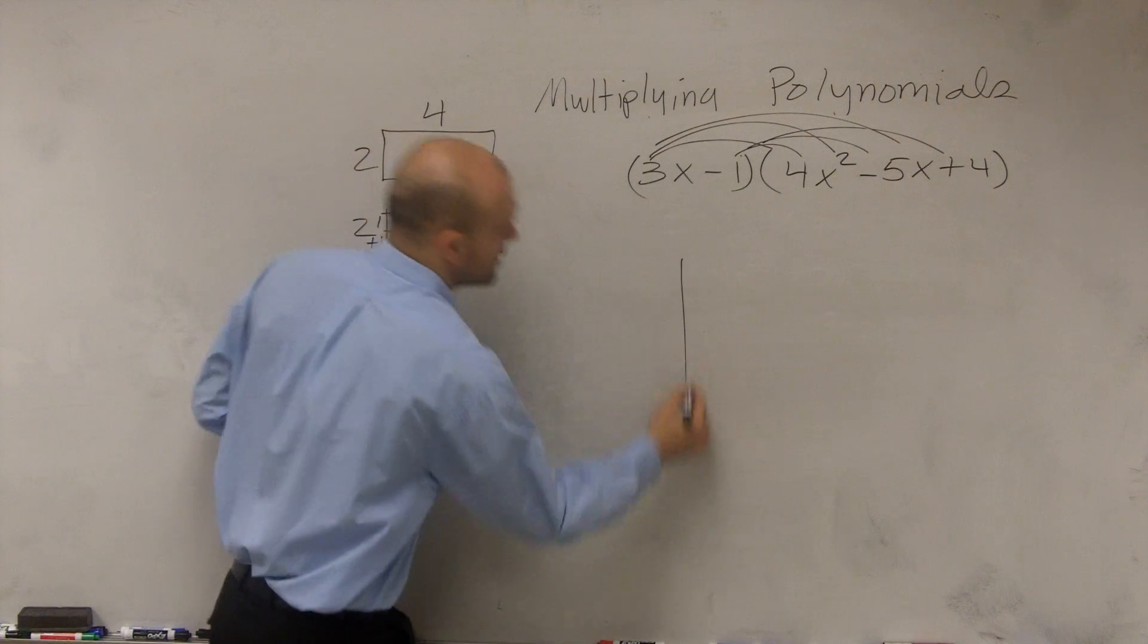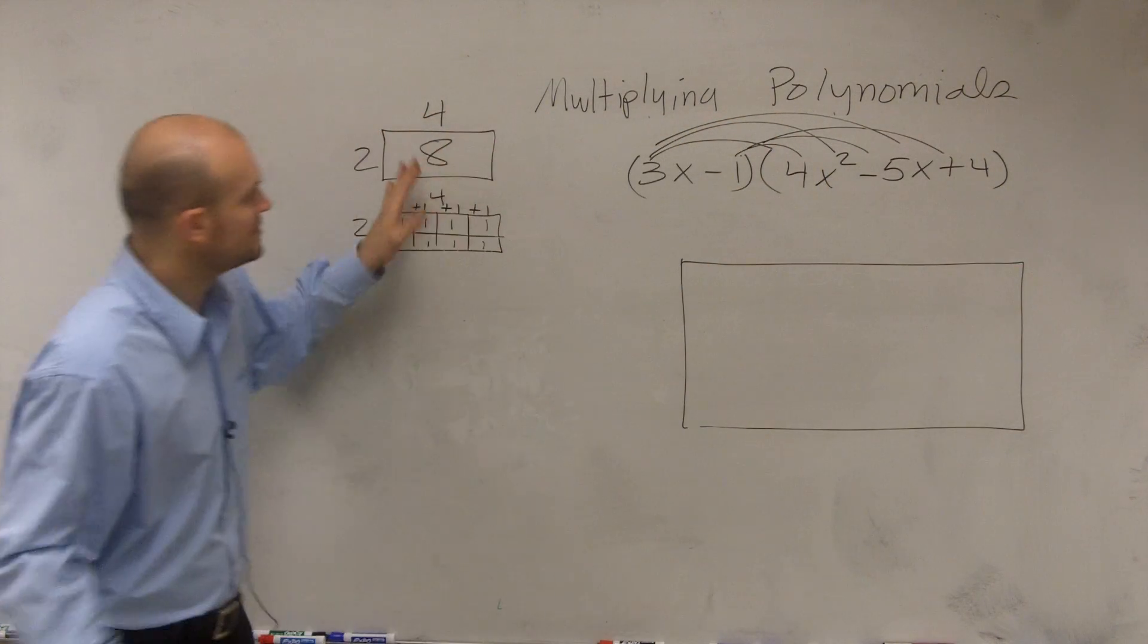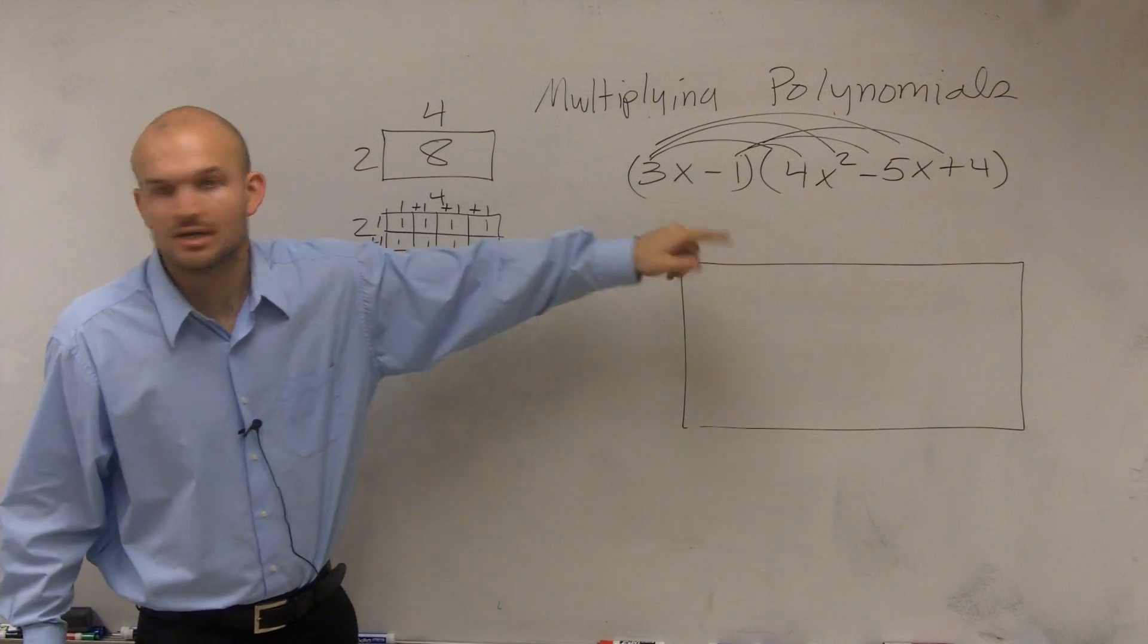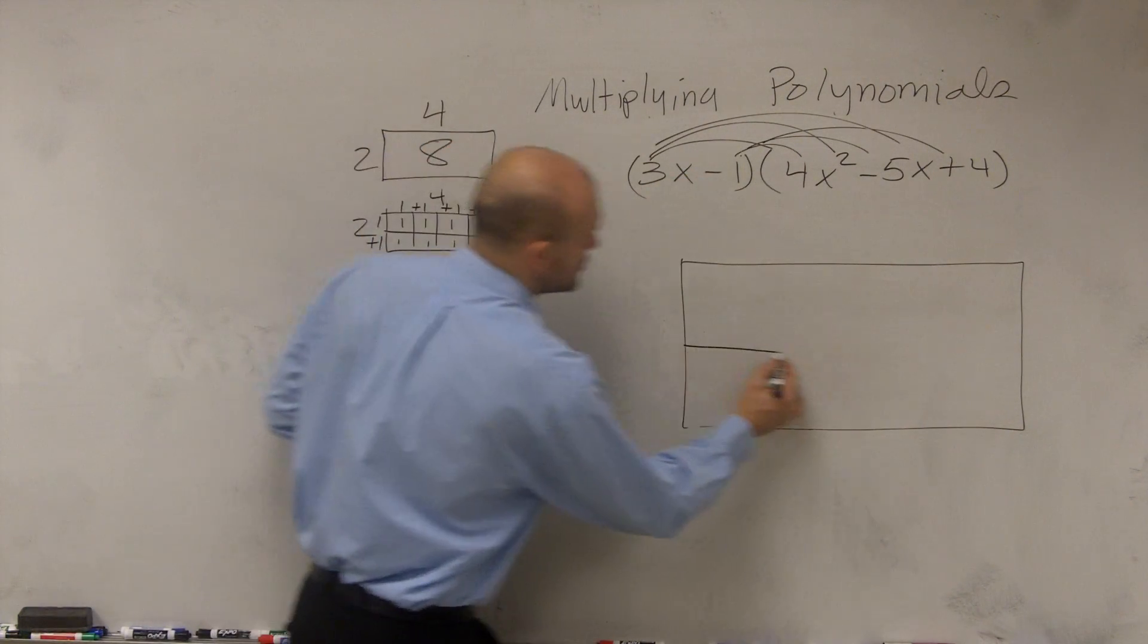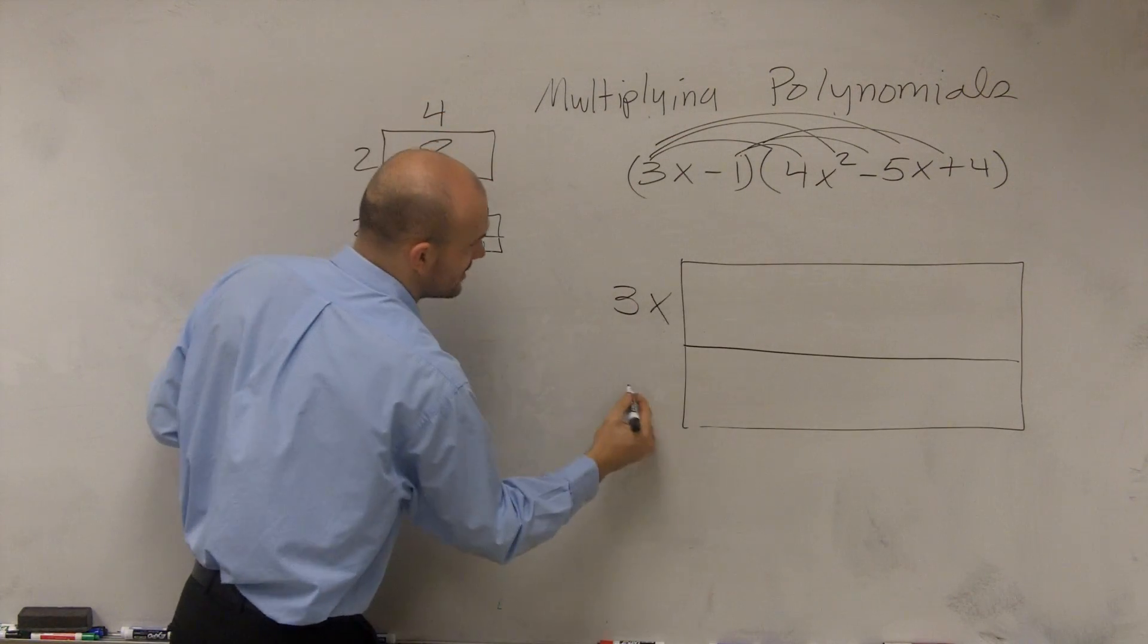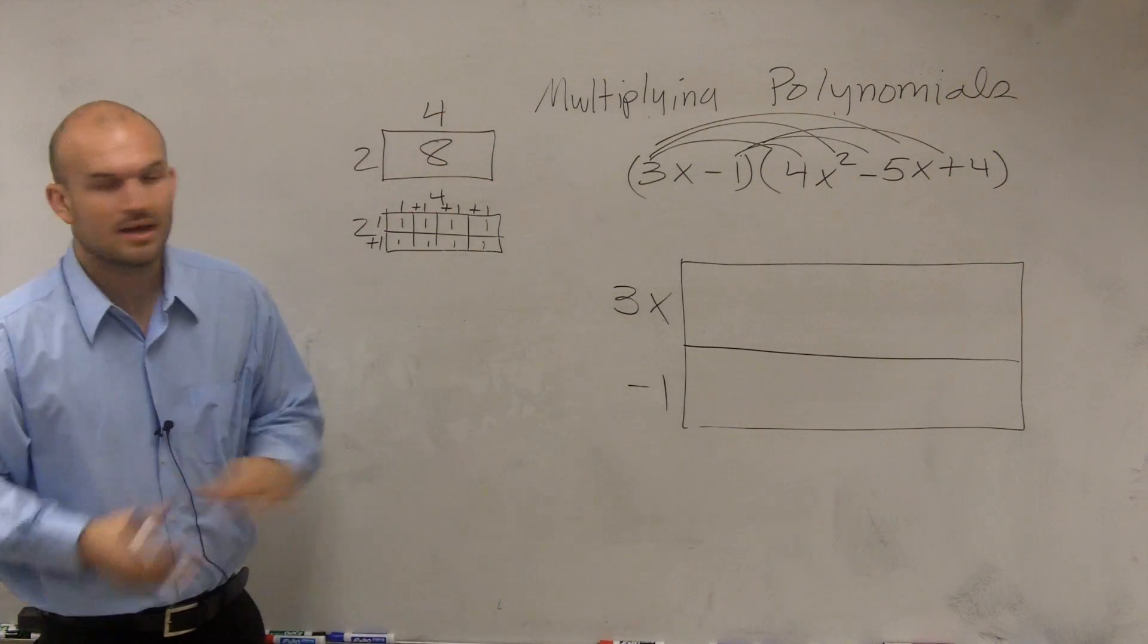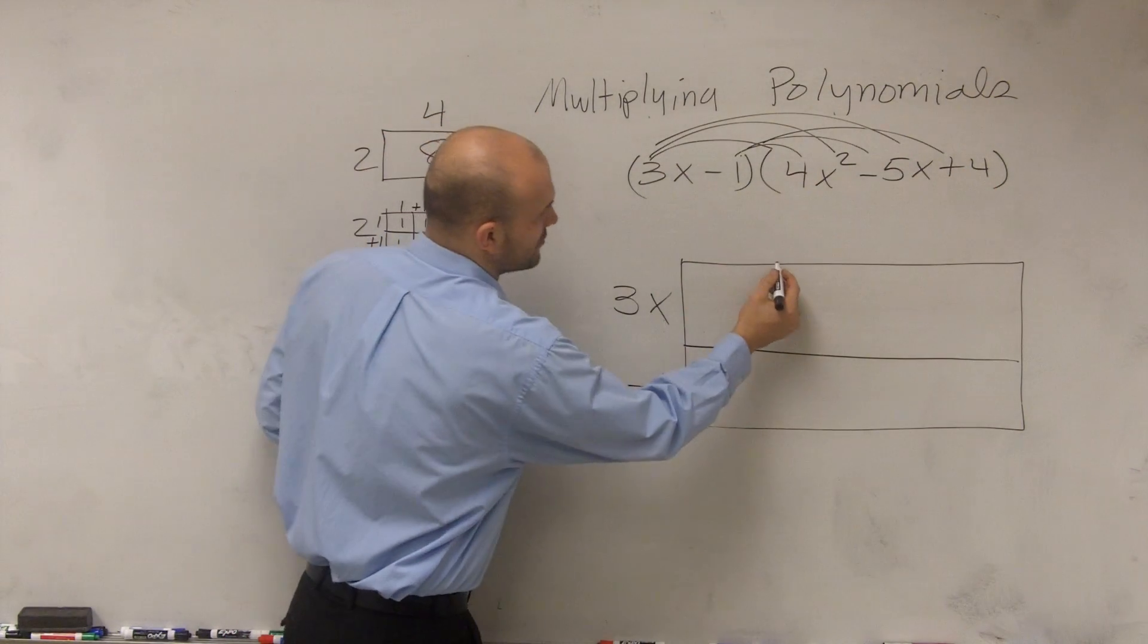So what I'm going to do is I'm going to create a rectangle. And rather than using these easy numbers, I'm going to use my polynomials. So here I have two of them. So I'm going to say I have two monomials. So I'm going to say the first one is 3x and the last one is negative 1. Then over here I have 3, so I'm going to break up my box into three different sections.